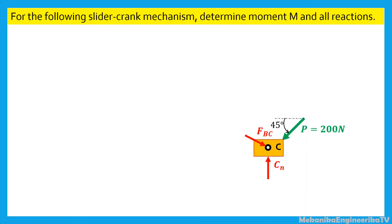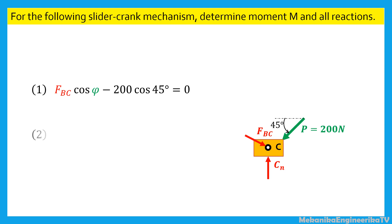For the slider C, it is possible to write two forces equilibrium equations. The equilibrium of forces along the horizontal direction gives: FBC times cosine phi, minus 200 cosine 45 degrees, is equal to zero. The equilibrium of forces along the vertical direction gives: CN minus FBC times sine phi, minus 200 sine 45 degrees, is equal to zero.